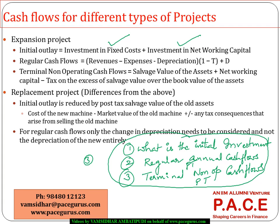If the change in net working capital is positive, it means additional financing is required, so it becomes a cash outflow; if negative, it becomes a cash inflow. For example, if last year current assets were 20,000 and now they are 25,000, there is an increase of 5,000 which decreases cash by 5,000.